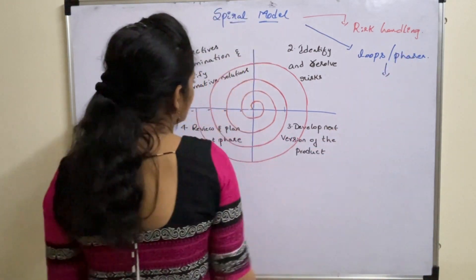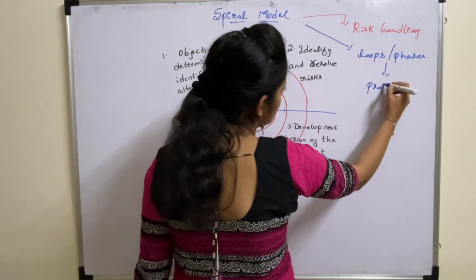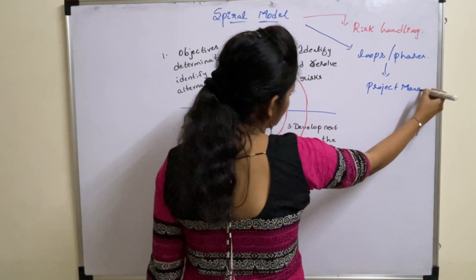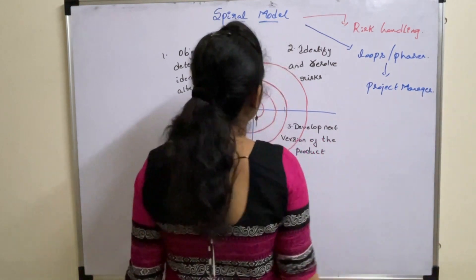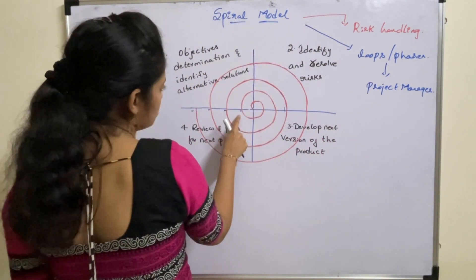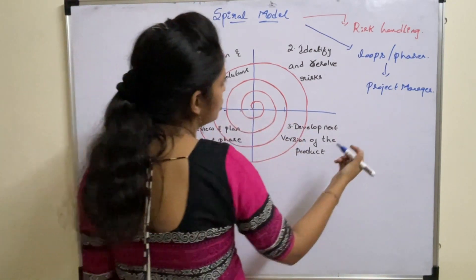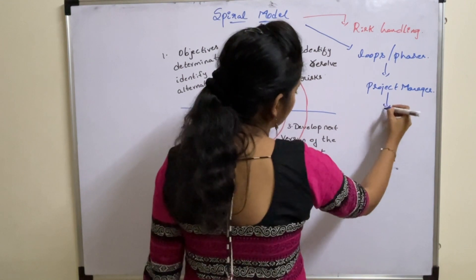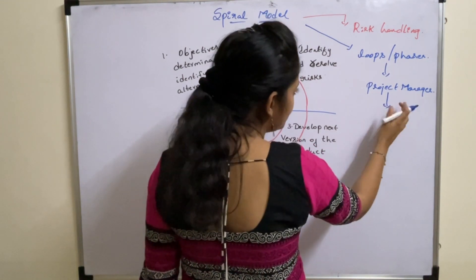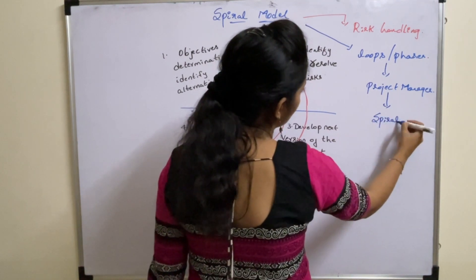Who decides these phases? The phases are decided by the project manager. If the project manager is not satisfied with the product after the completion of phase 1 or loop 1, then he will proceed with loop 2. The project manager plays an important role in the spiral model.